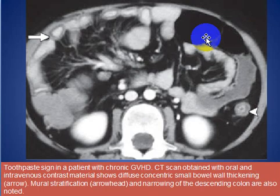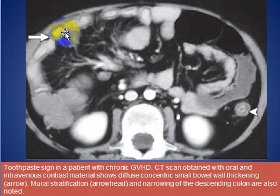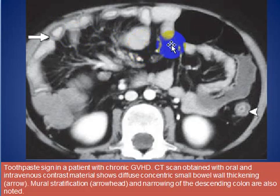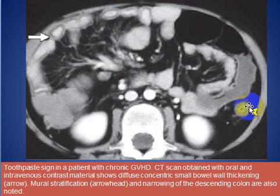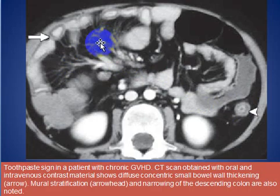Here is another patient with thickening of the small bowel wall — we call this the toothpaste sign — in a patient with chronic graft versus host disease. The CT is obtained after oral and IV contrast. We see the thickened wall here, the target sign, and some stranding of the mesentery.